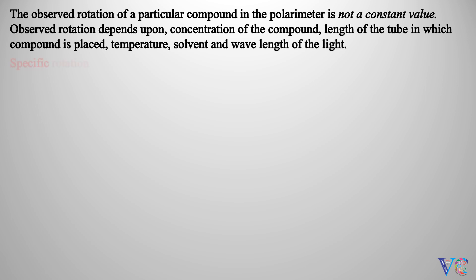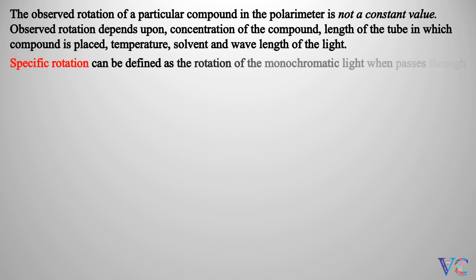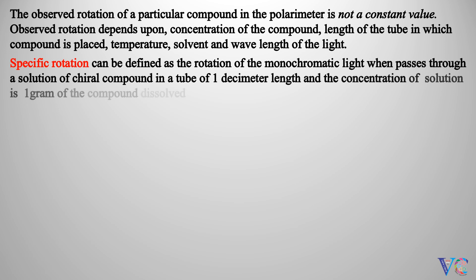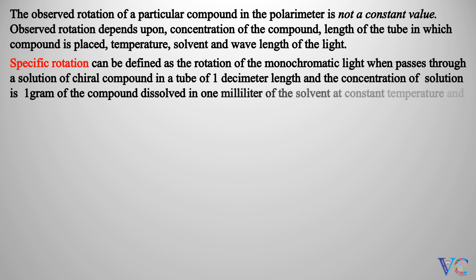Specific rotation can be defined as the rotation of monochromatic light when it passes through a solution of a chiral compound in a tube of one decimeter length, and the concentration of the solution is one gram of the compound dissolved in one milliliter of the solvent, at constant temperature and wavelength.